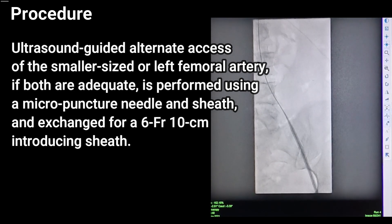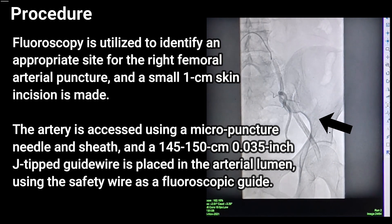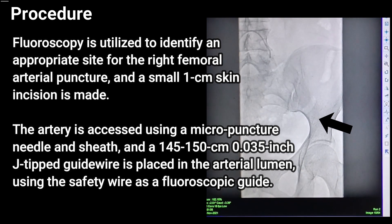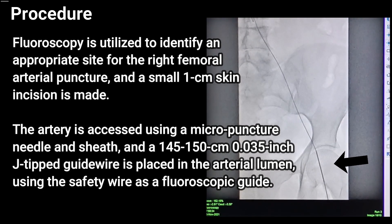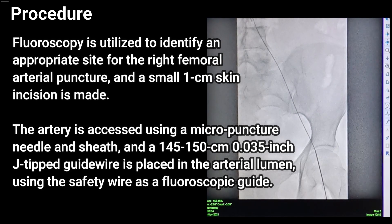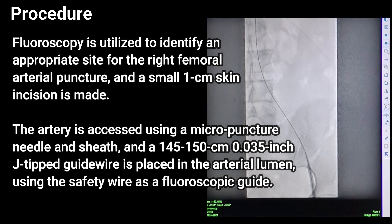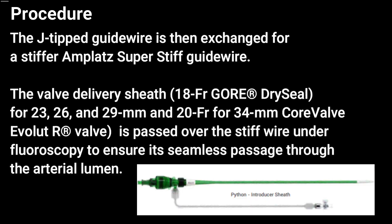Puncturing is performed using a micro-puncture needle and sheath, exchanged for a 6-French 10-centimeter introducing sheath. Fluoroscopy is used to identify an appropriate site for the right femoral arterial puncture, and a small 1-centimeter skin incision is made. The artery is accessed using a micro-puncture needle and sheath, and a J-tipped guide wire is placed in the arterial lumen using the safety wire as a fluoroscopic guide.